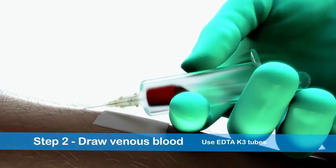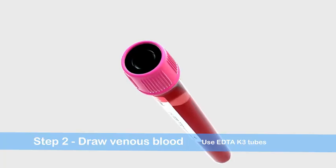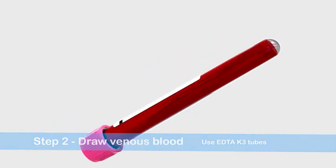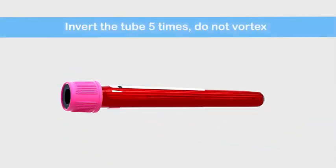For the second technique, collect venous blood in a collection tube and immediately mix it by inverting the tube five times.